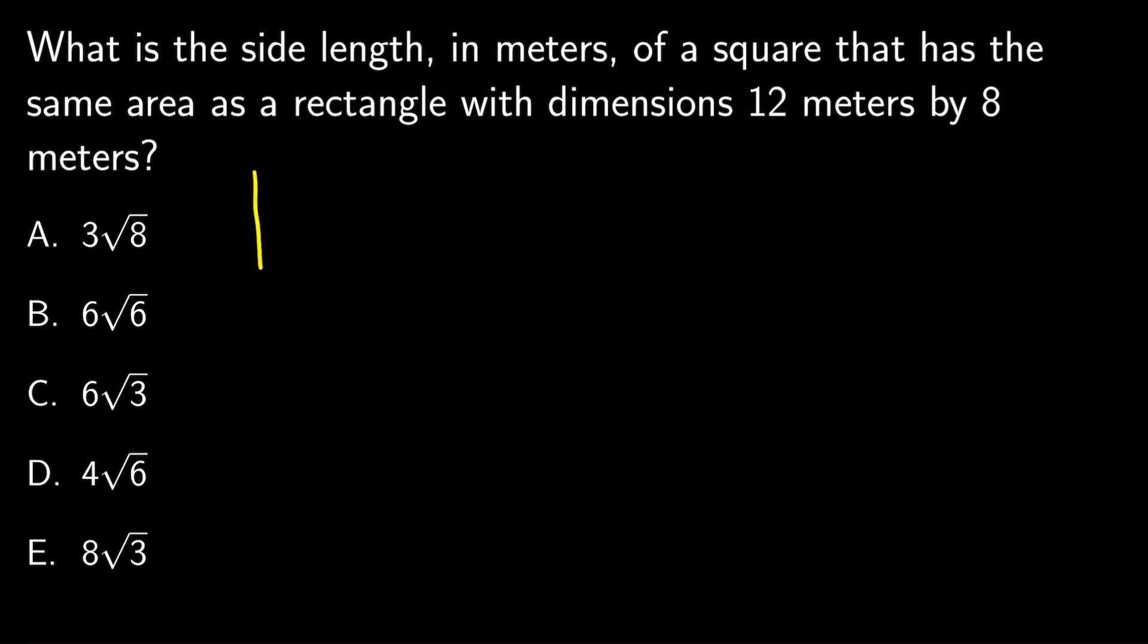Well, we have got a square which has the same area as a rectangle measuring 8 by 12. This means that a squared, the area of the square, equals 8 times 12, the area of the rectangle.